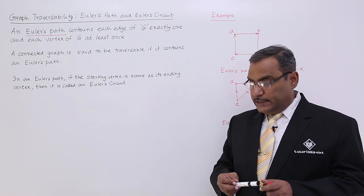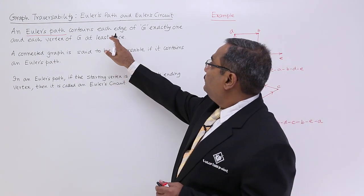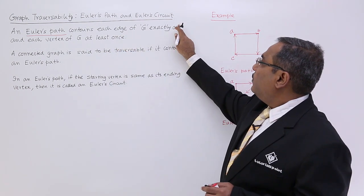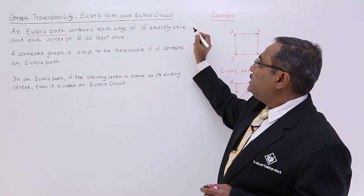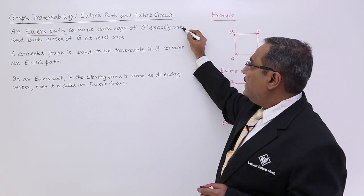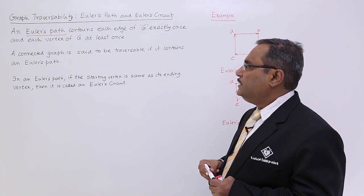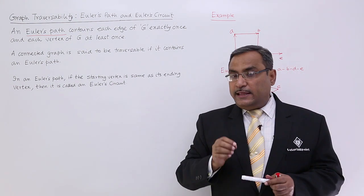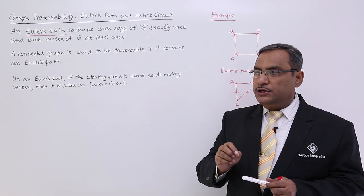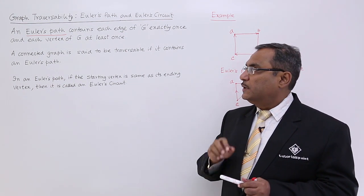Each edge of G must be exactly once. Each edge must come in the path exactly once, and each vertex of G at least once. That is the basic and fundamental condition of finding Euler's path.